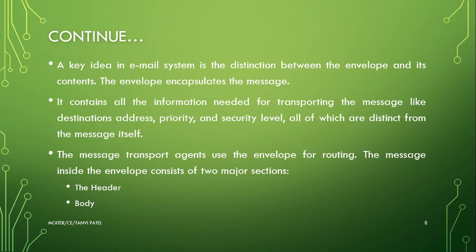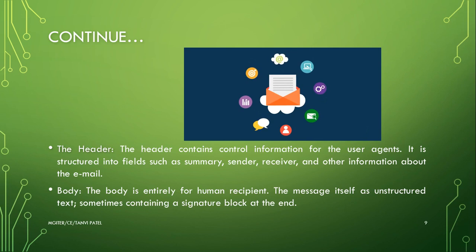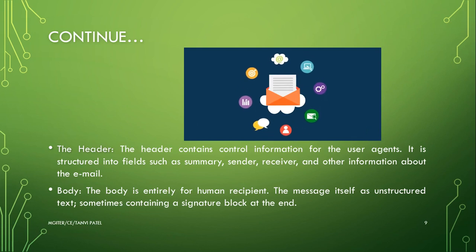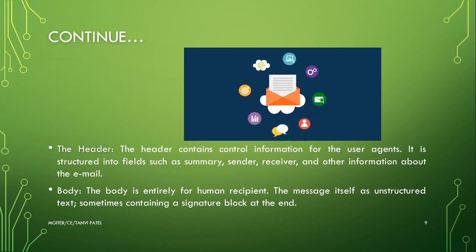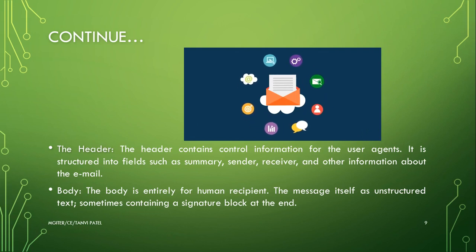The message transport agent uses the envelope for routing purposes. The message inside the envelope consists of two major sections: the header and the body. The header contains control information for the user agents, structured into fields such as summary, sender name, receiver, and other information. The body is entirely for the human recipient — the message itself is unstructured text, sometimes containing a signature block at the end.